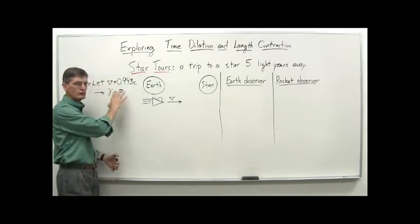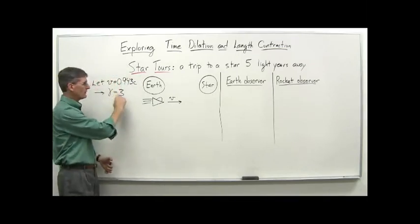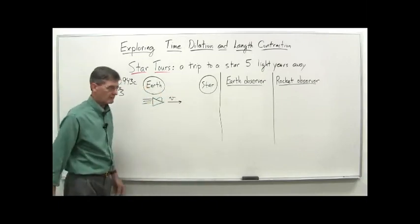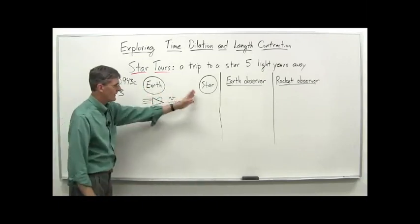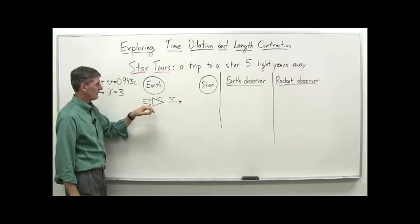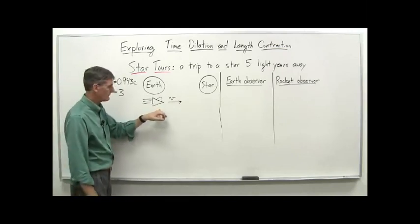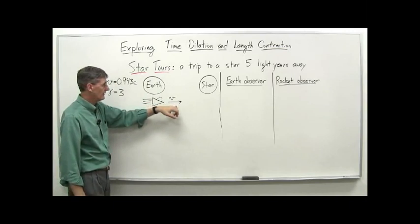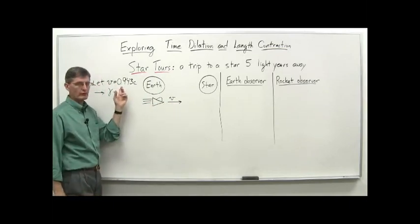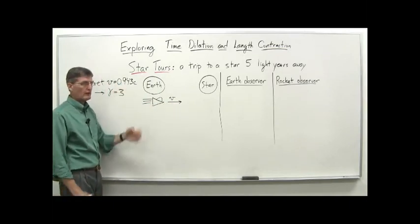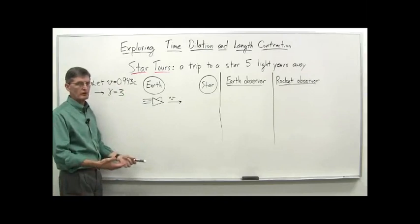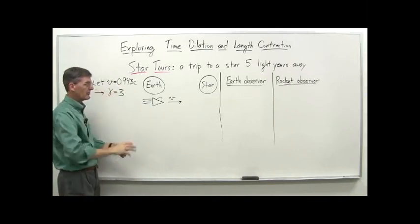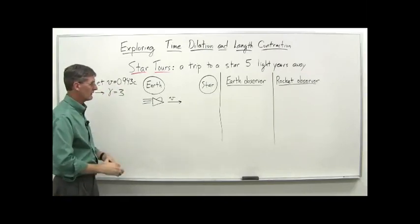For our trip, we're going to assume our velocities — here's Earth, here's the star, about five light years away — and here's Bob's spaceship traveling at velocity V. We're going to assume V is 0.943 times the speed of light. The reason we chose that is it gives us a gamma factor of three, a nice even Lorentz factor.